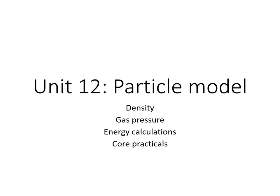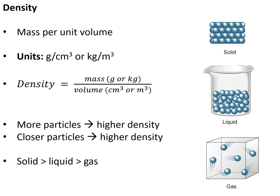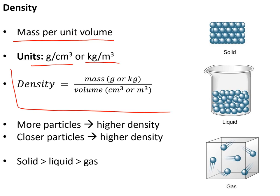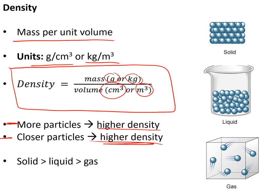Unit 12: the particle model, covering density, gas pressure, energy calculations and more. Density is the amount of mass per unit volume, with units of g/cm³ or kg/m³, calculated as density = mass ÷ volume — make sure units match. Density increases with the number of particles and how closely packed they are. In general, solids are more dense than liquids, and liquids more dense than gases, because particles are closer together as you go from gas to liquid to solid.